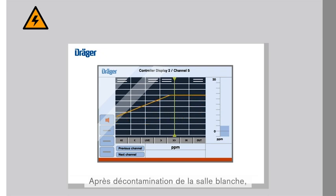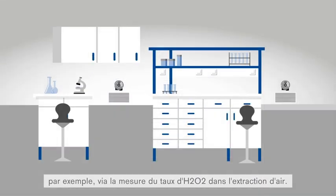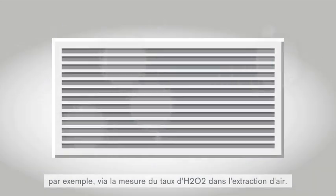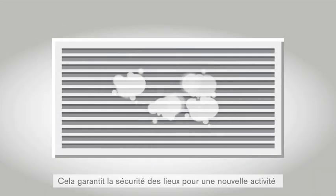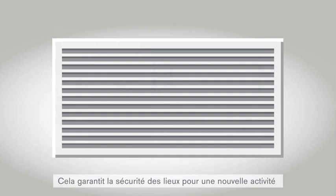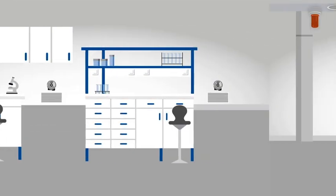Upon completion of decontamination in the clean room, a clearance measurement is conducted — for example, by measuring the H2O2 concentration in the exhaust air. This ensures that the clean rooms can safely be used again, thus allowing operations to continue.